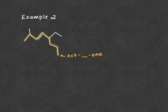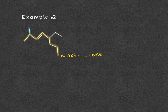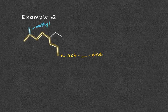Next, we're going to identify our branches. We have two branches in this case: a methyl on the left side of our molecule, and an ethyl on the right side of our molecule.